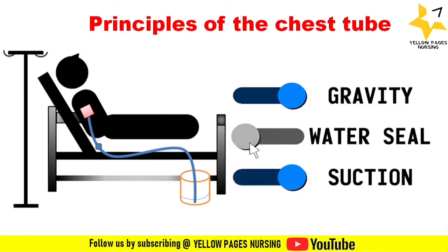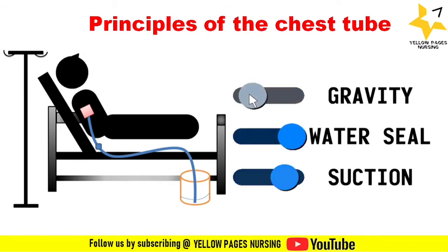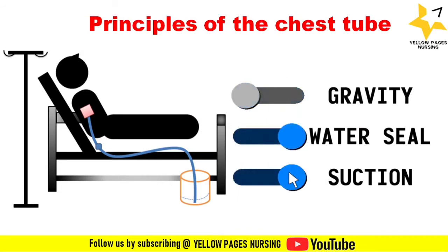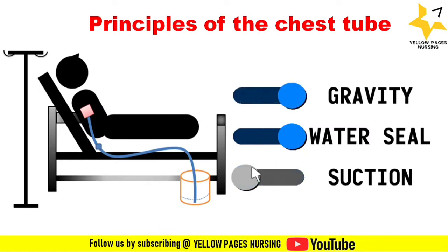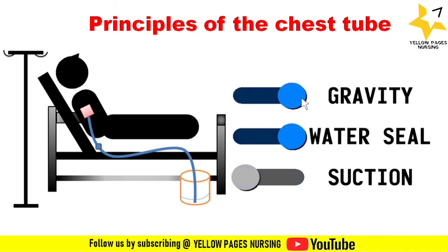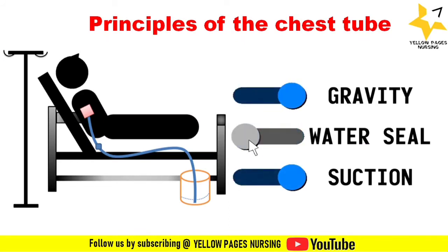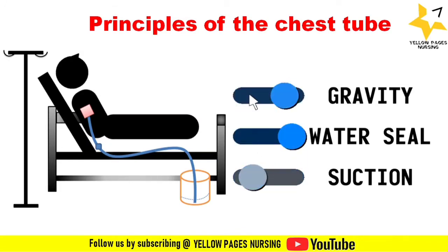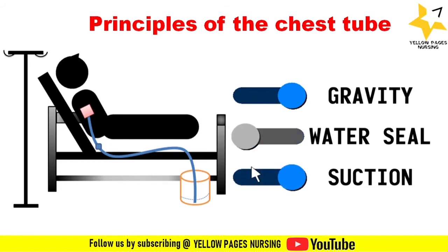The first principle of chest drain is gravity. Gravity generally means movement from higher concentration to lower concentration. Because the intrapleural pressure is greater than plus two centimeters of water, the air moves from a higher to lower pressure. Generally the drainage bag is placed below the patient's bed, which allows this gravity drainage.